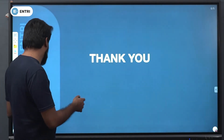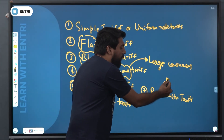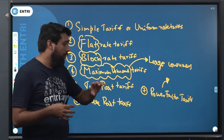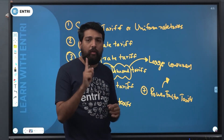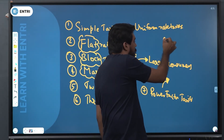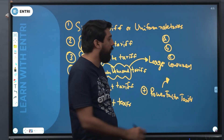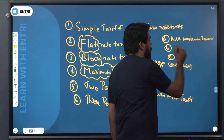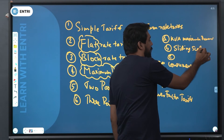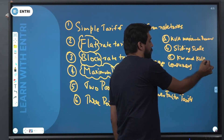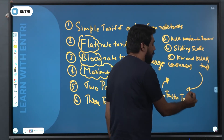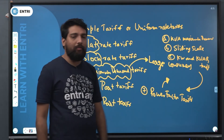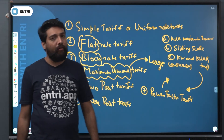The seventh is the power factor tariff. When calculating the power factor tariff for a consumer, there are three types: A — KVA Maximum Demand Tariff; B — Sliding Scale Tariff; C — KW and KVAR Tariff. These three types are very important under the power factor tariff category.